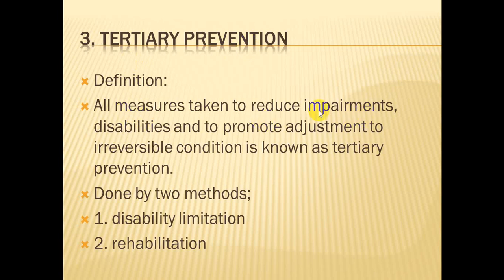Tertiary prevention involves all measures taken to reduce impairments and disabilities, and to promote adjustment to irreversible conditions. These measures aim to reduce disabilities and impairments, and if someone develops an irreversible condition in the body, to promote the patient's adjustment with the disease. It is done by two methods: disability limitation — keeping disability to a minimum so it does not progress — and rehabilitation.